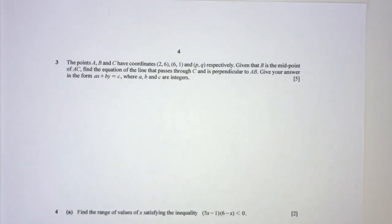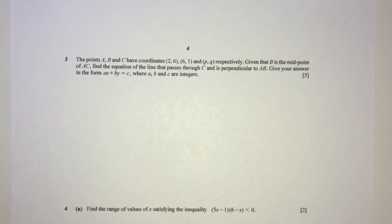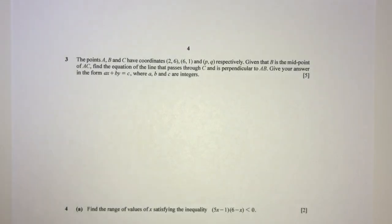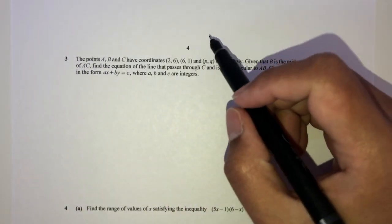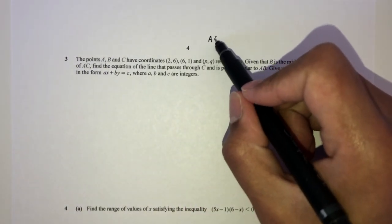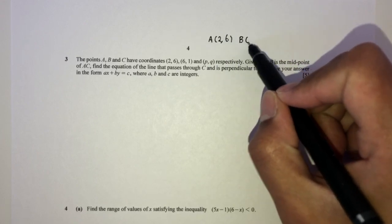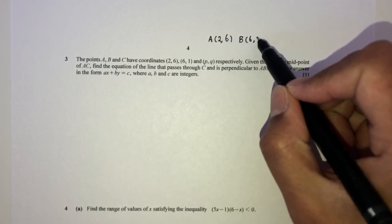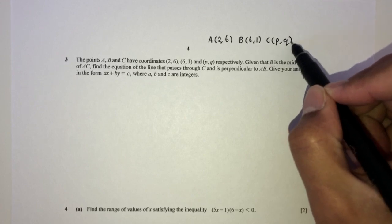Now let's move on to question number 3. The points A, B, and C — we have 3 points with coordinates. We have A at (2, 6), B at (6, 1), and C at (p, q) — we don't know that yet.